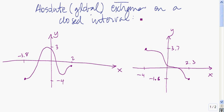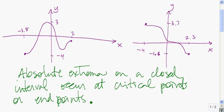Because absolute extrema are also relative extrema, absolute extrema can occur at critical points. But as these two examples indicate, absolute extrema can also occur at endpoints. Because these are the only places for absolute extrema to occur, all we need to do to find absolute extrema is to find the critical points.